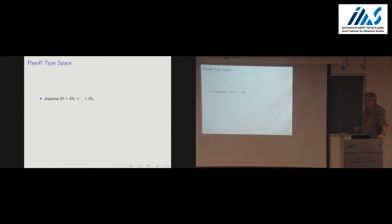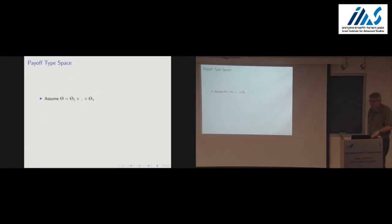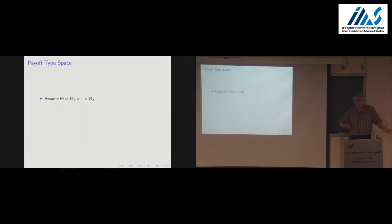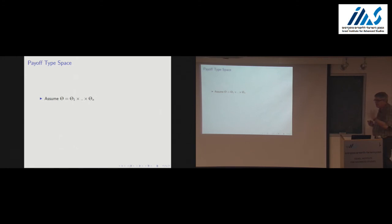One last thing I want to talk about, which is going to be important for mechanism design: I gave you results for an arbitrary type space. It turns out that for the implementation results I'm going to talk about tomorrow, we're going to be working with some type space where players have some particular structure of prior information about the state of the world. Let me see how the stuff I've talked about maps into this certain special case.